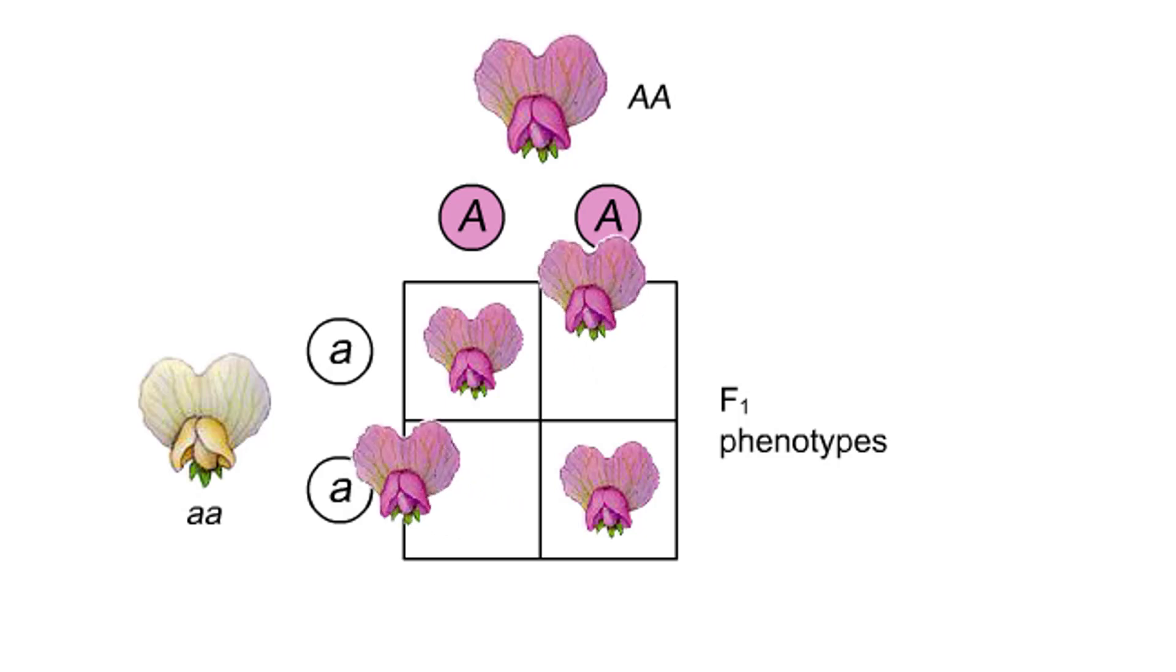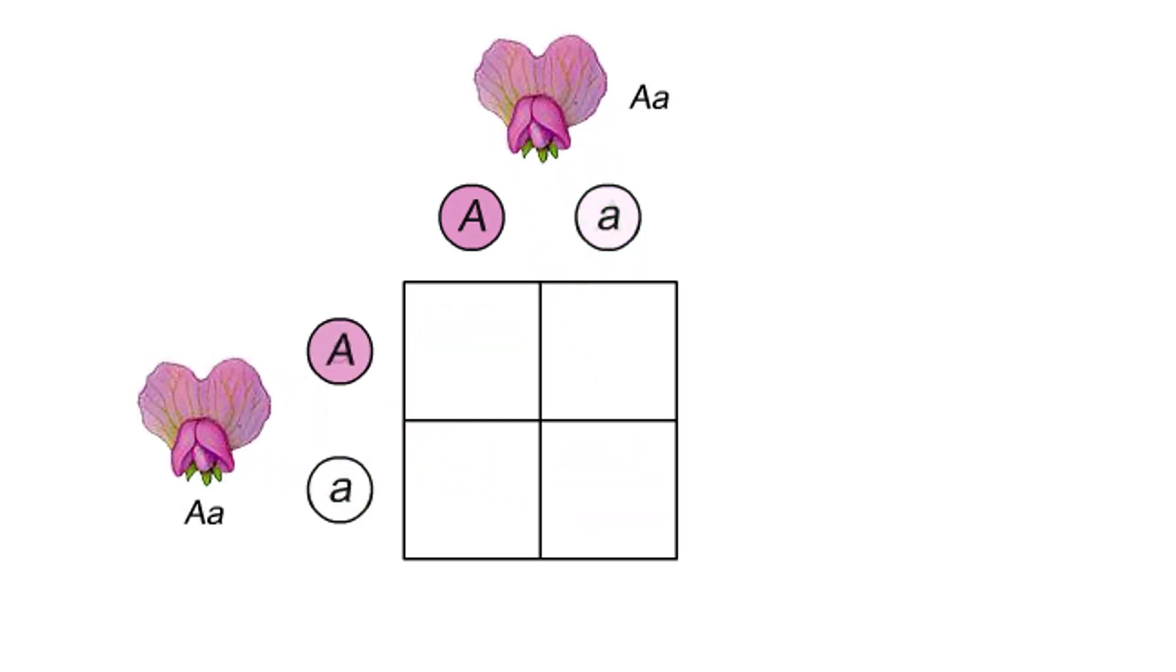Now suppose two of the F1 plants are crossed. Once again, we can use a Punnett square to predict the genotypes of the offspring.